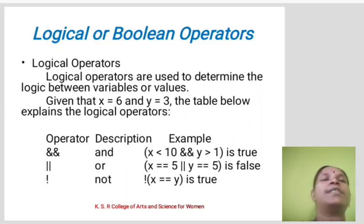AND operator: x less than 10 and y greater than 1 is true. OR operator: x double equals 5 or y double equals 5 is false. NOT operator: not x double equals y is true.